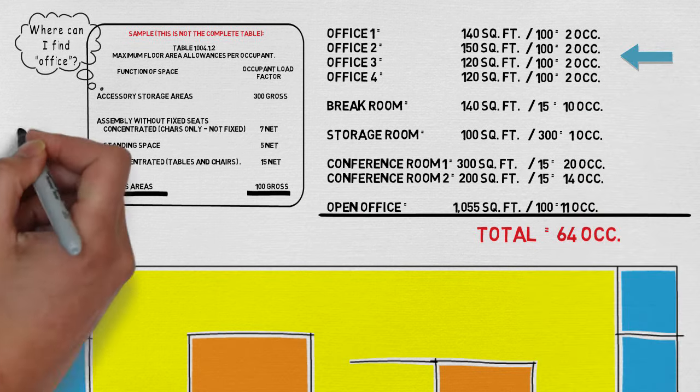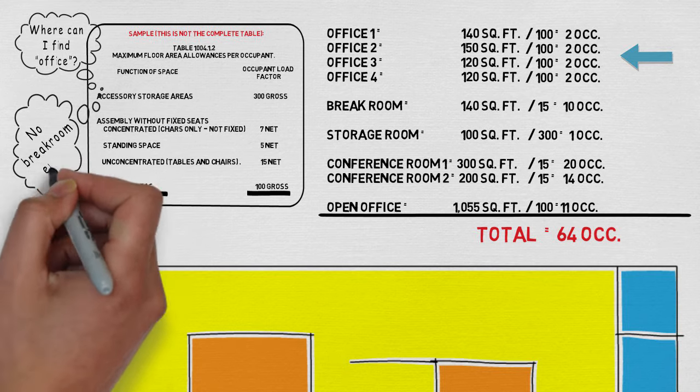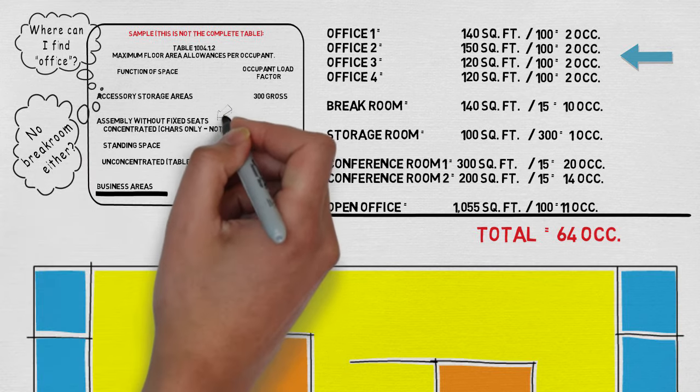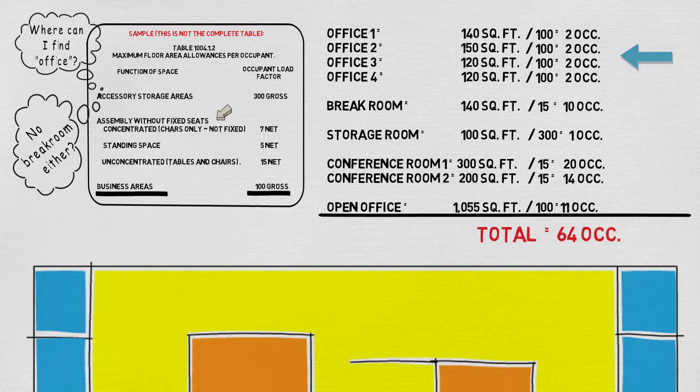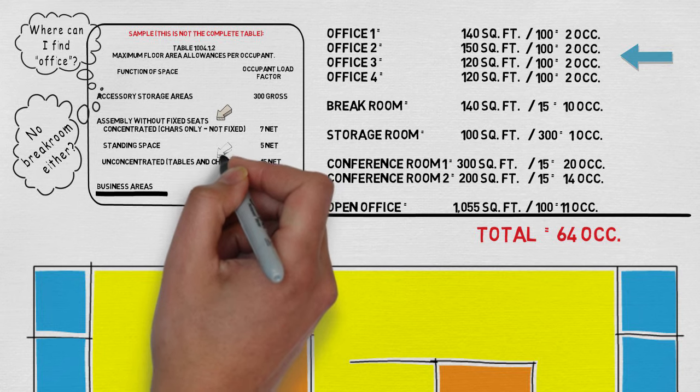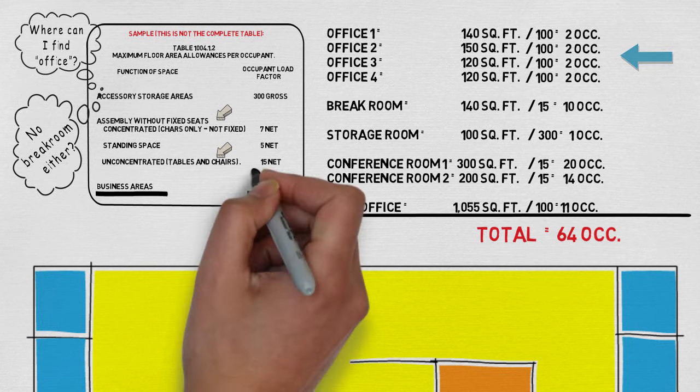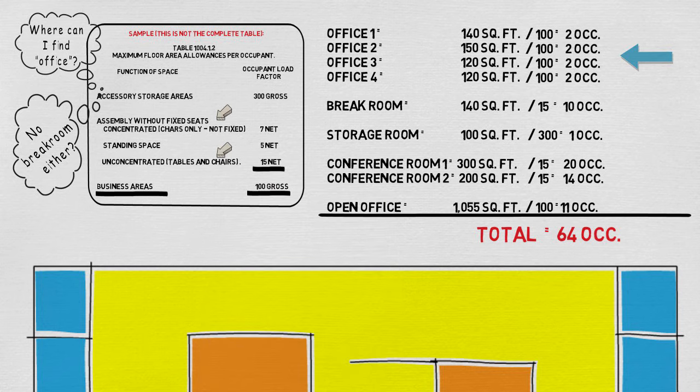You will also not find a place in the table that is called a break room. But in the table you will find a section that's called assembly without fixed seats. As a matter of fact, underneath that you see a subcategory that's called unconcentrated tables and chairs. And that's what a break room is. You have tables and chairs so that you can eat and have lunch and things like that. And it says there that this will be calculated at one occupant per 15 square feet.